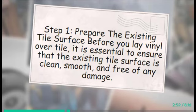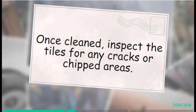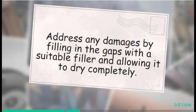Step 1: Prepare the existing tile surface. Before you lay vinyl over tile, it is essential to ensure that the existing tile surface is clean, smooth, and free of any damage. Begin by removing dirt, grime, and any residue using a mild detergent and warm water. Once cleaned, inspect the tiles for any cracks or chipped areas. Address any damages by filling in the gaps with a suitable filler and allowing it to dry completely. A smooth and even surface will ensure the vinyl adheres properly and prevents any imperfections from showing through.